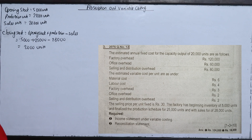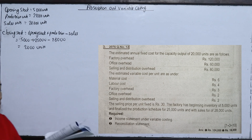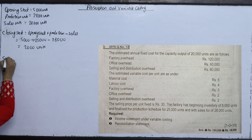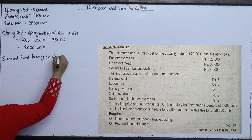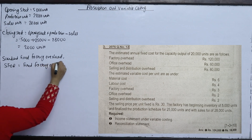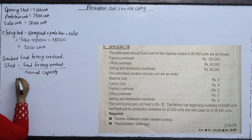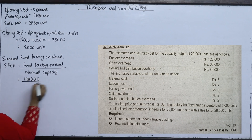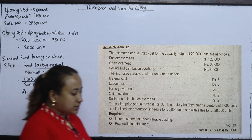Variable costing and absorption costing results need to be reconciled using the Standard Fixed Overhead Rate (SFOR). For the absorption costing income statement, we need the standard fixed overhead rate. Fixed factory overhead of 1,20,000 divided by normal capacity of 20,000 units gives a standard fixed overhead rate of Rs. 6 per unit.